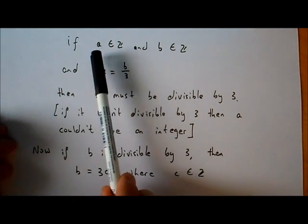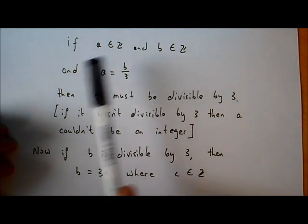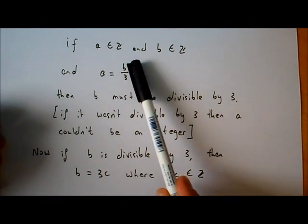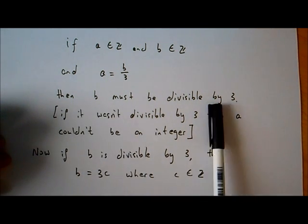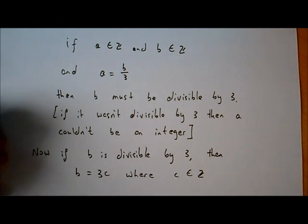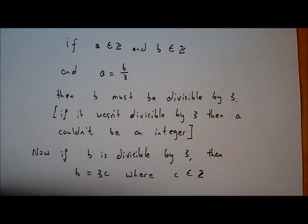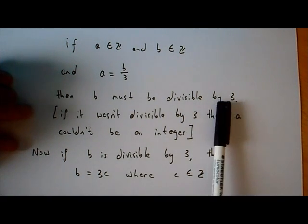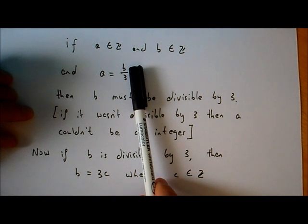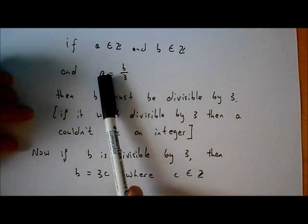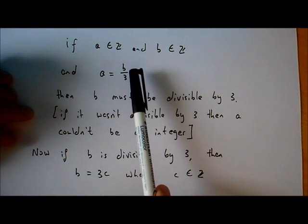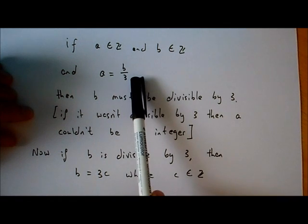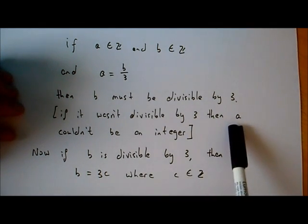The idea is this. Let's say A is an integer and B is an integer, and A is equal to B divided by 3. That must mean that B must be divisible by 3, because if it wasn't divisible by 3, then A couldn't be an integer. For example, if B was 10, then 10 divided by 3 is 3 and a third, which is not an integer. So if A equals B over 3 and both A and B are integers, then B must be divisible by 3.